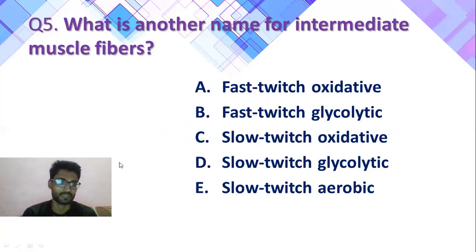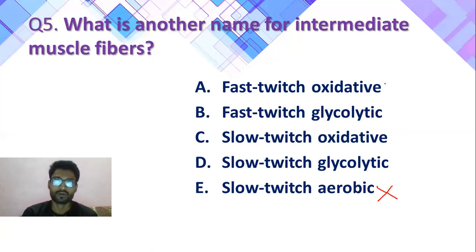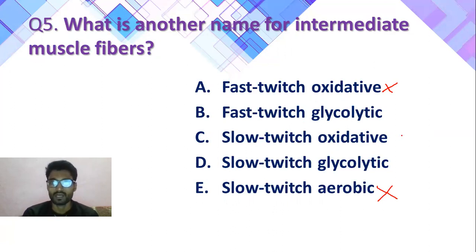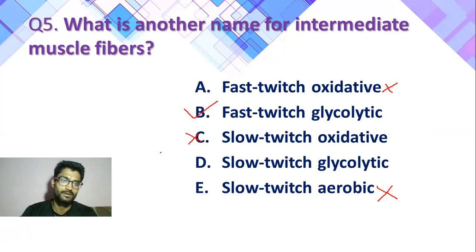Question number 5: What is the another name of intermediate muscle fiber? Eliminate करते हुए चलेंगे। Slow twitch anaerobic — slow twitch aerobic होता है, गलत। Fast twitch oxidative — यह Type 2B होता है, intermediate नहीं। Slow twitch glycolytic — slow twitch में glycolytic नहीं होता। Fast twitch glycolytic — यही answer B correct होगा। बाकी सारे answers गलत।